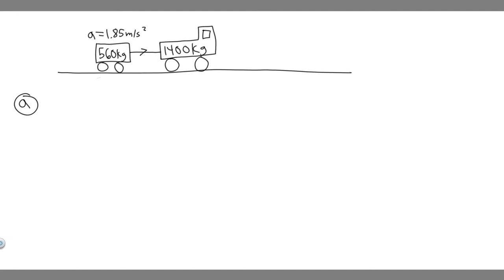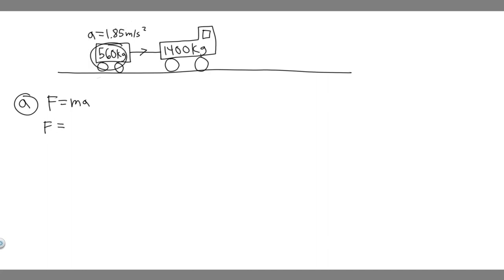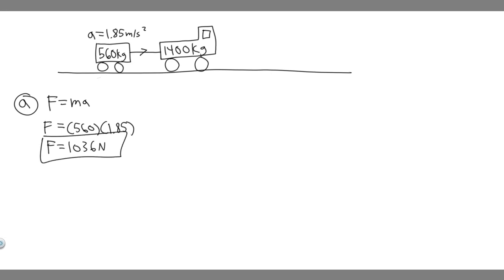For Part A, we're trying to find the net force exerted on the trailer — basically the force on this object. We know that according to Newton's second law, force is equal to mass times acceleration. To calculate the net force on an object, we take the object's mass and multiply it by the rate at which it's accelerating. So we take the mass of the trailer, 560 kilograms, and multiply it by the acceleration, 1.85. That gives us a force of 1,036 Newtons. This is the net force and your answer to Part A.